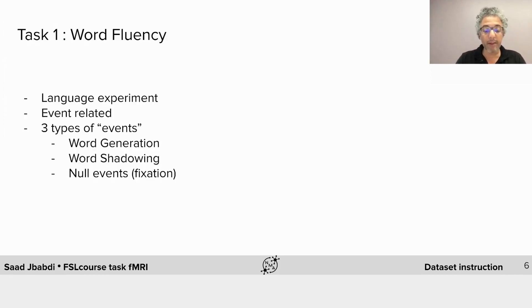We provide two datasets that use two different tasks. The first task is a language experiment. It is event-related, which simply means that the stimuli are very short in duration. Each stimulus belongs to one of three separate events.